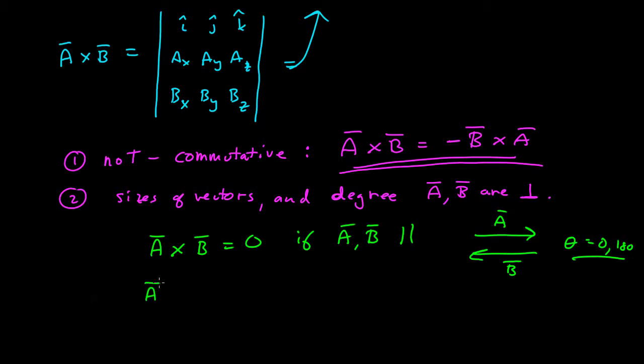And if they're perpendicular, then the magnitude of the cross product is simply the product of the magnitudes themselves, because that implies theta is 90 degrees and sine theta is one. The magnitude is maximized when A and B are perpendicular to each other.